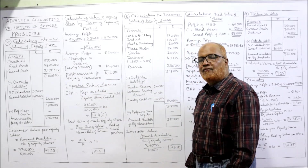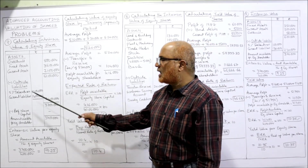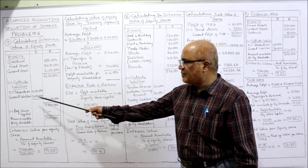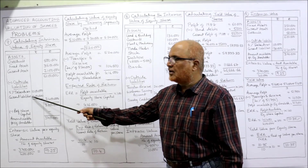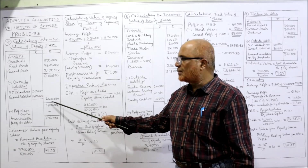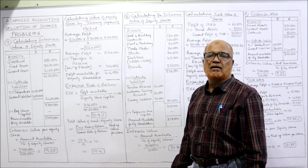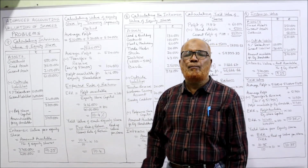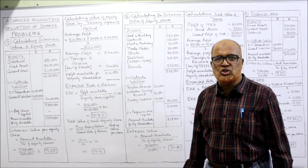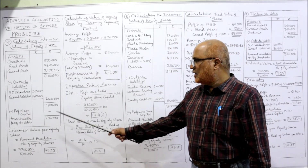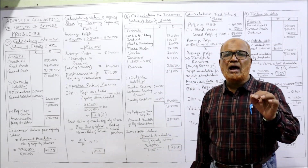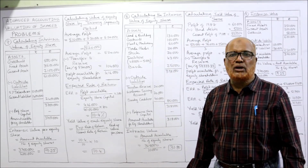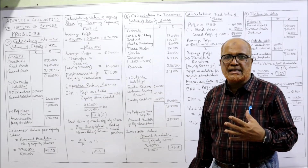From this, outside liabilities — two outside liabilities: 5% debentures and sundry creditors (current liabilities). Take the total: 24 lakh. Subtract — we get 37 lakh. Now we deduct the preferential capital, but we don't have preference capital in the problem.